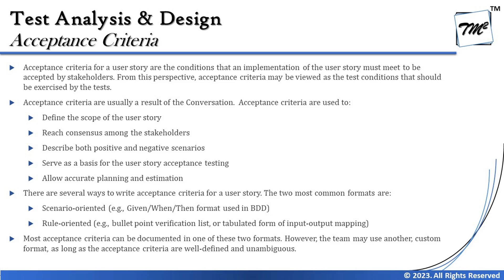There are several ways to write acceptance criteria for a user story. The most common formats are: one, scenario-oriented — which is the given/when/then format, used quite often in BDD — and two, rule-oriented — like a bullet-point verification list or a tabulated form of input-output mapping.